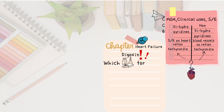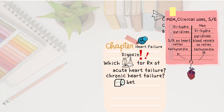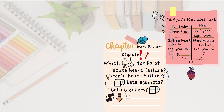Which drugs are used for the treatment of acute heart failure? Which drugs are used for the treatment of chronic heart failure? What is the role of beta agonists in acute heart failure? What is the role of beta blockers in chronic heart failure? Which drugs decrease mortality and prolong life in chronic heart failure? What are the newer drugs such as nesiritide, sacubitril, and valsartan, and what are their mechanisms of action?